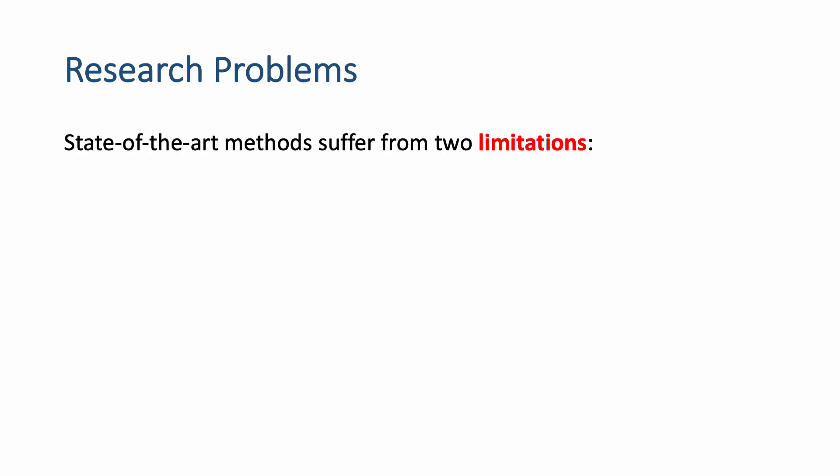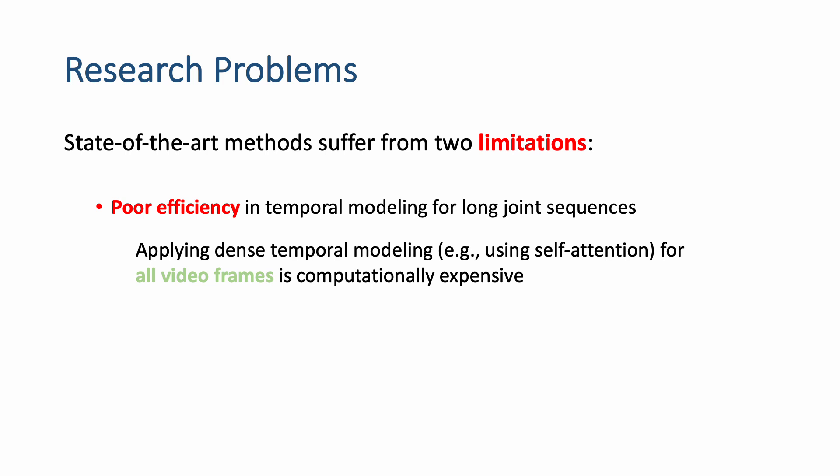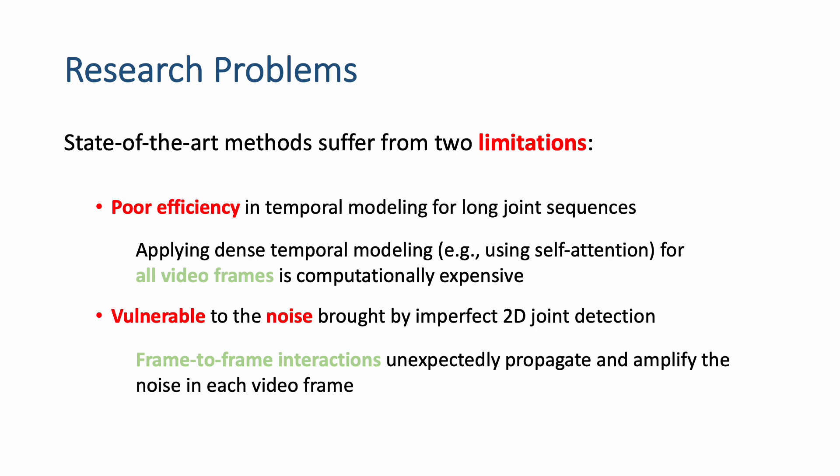However, this approach suffers from two limitations. The first one is poor efficiency in temporal modeling for long joint sequences. Applying dense temporal modeling, for example using self-attention for all video frames, is computationally expensive. The second one is that they are vulnerable to the noise brought by imperfect 2D joint detection. Frame-to-frame interactions unexpectedly propagate and amplify the noise in each video frame.